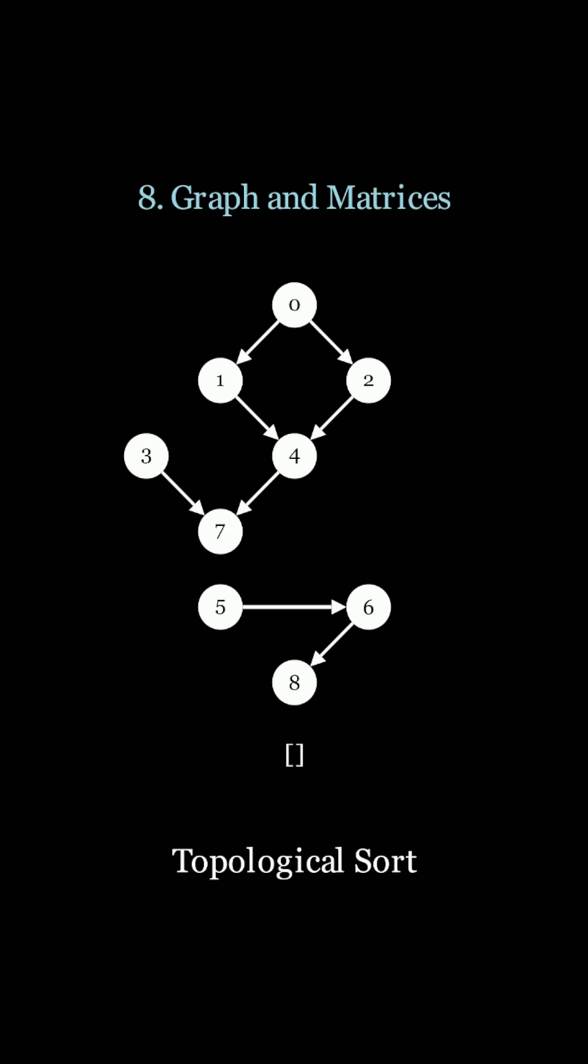Next up we have topological sort. Topological sort is used for DAGs, direct acyclic graphs, where you have prerequisite nodes that you must visit before you visit other nodes. Note that node zero points to node one and node two.